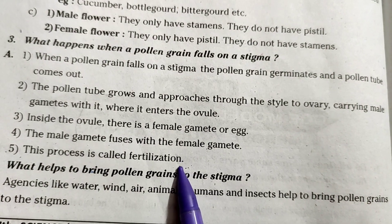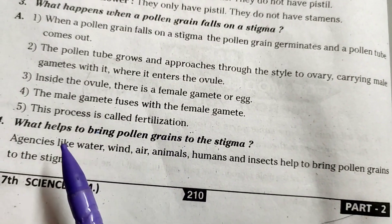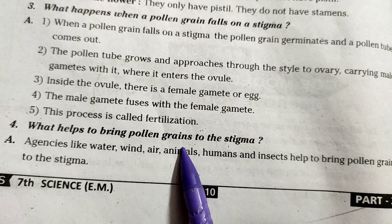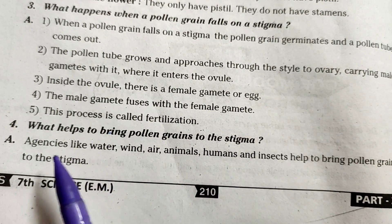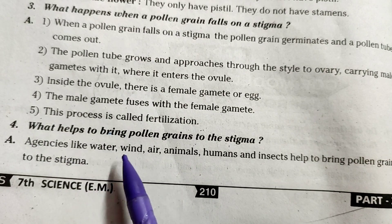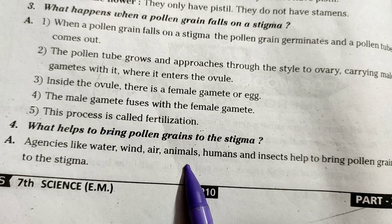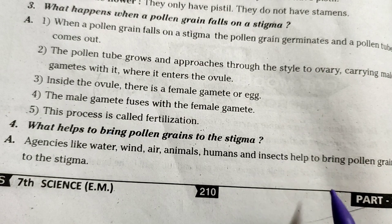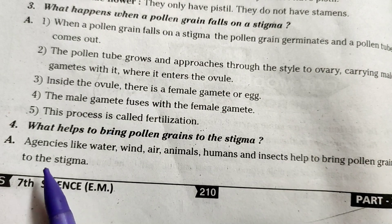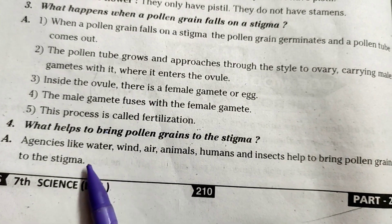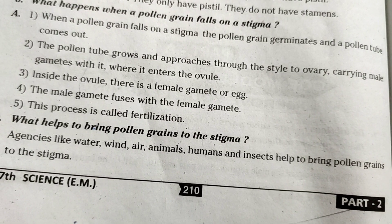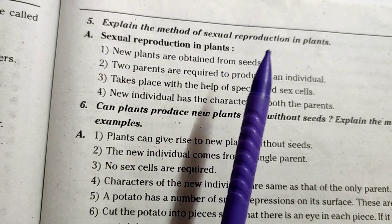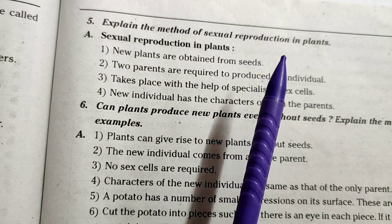Inside the ovule there is a female gamete or egg. The male gamete fuses with the female gamete; this process is called fertilization. What helps to bring pollen grains to the stigma? Agencies like water, wind, air, animals, humans, and insects help to bring pollen grains to the stigma.